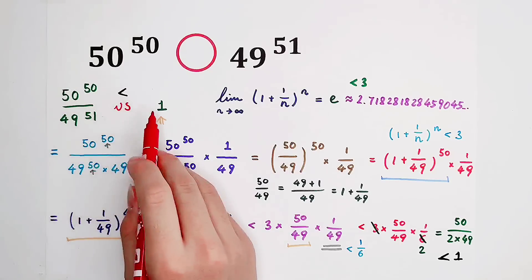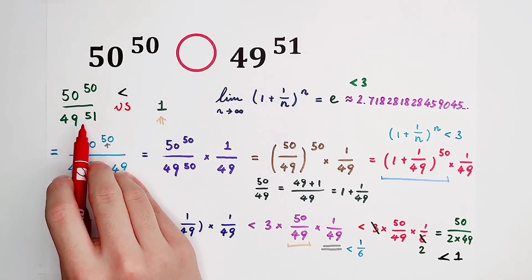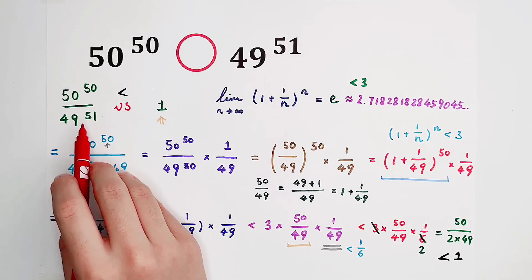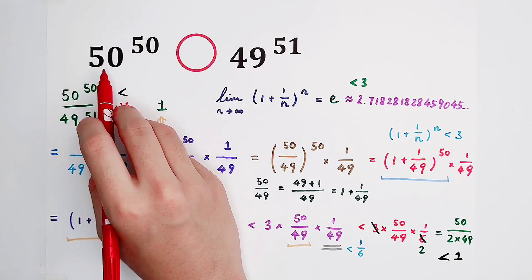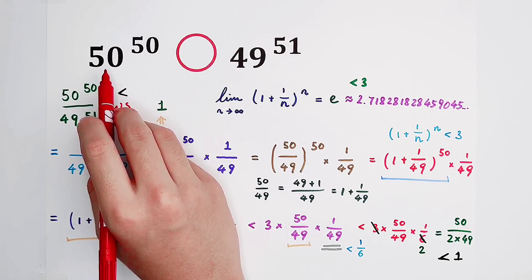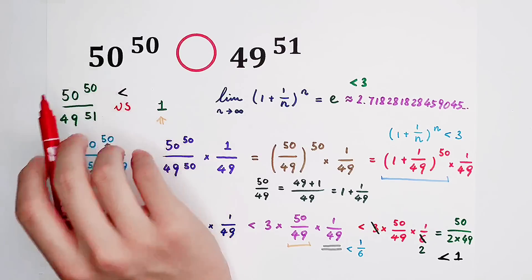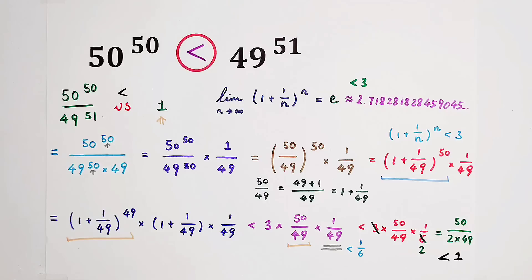So here, if we multiply both sides by 49^51, we can get the right-hand side is 49^51, the left side is 50^50. And the answer is smaller. The right-hand side is much, much greater.